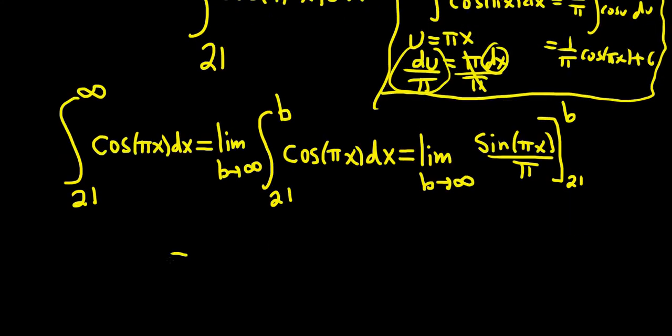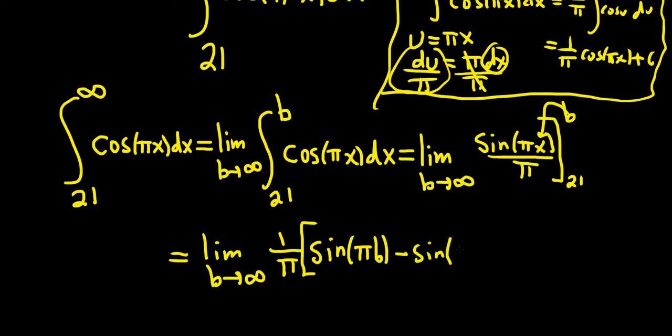So this is equal to the limit as b approaches infinity. Now we plug in the b for the x. This will be 1 over pi—I'll leave that out. Then plug in the b, so it'd be sine pi b minus sine pi times 21, so 21 pi. 21 pi is just a number, no big deal there.